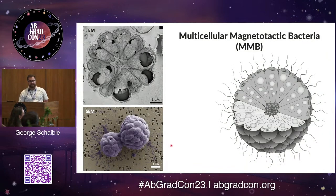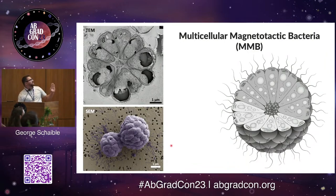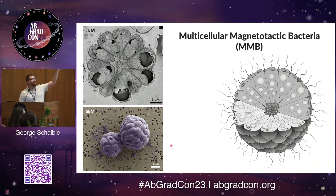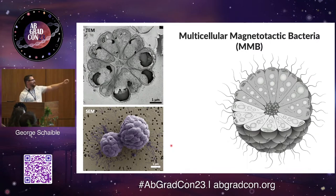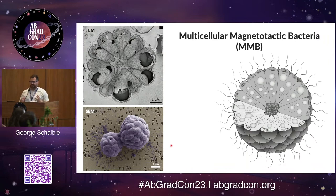The organism that I study is called multicellular magnetotactic bacteria, or MMB for short. This is what they look like — a TEM image showing where these cells are grouped together in a soccer ball or football shape, and in the lower half an SEM showing what that structure looks like.